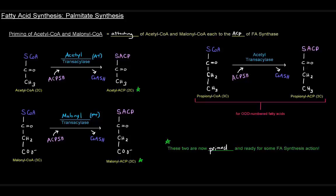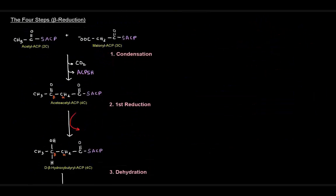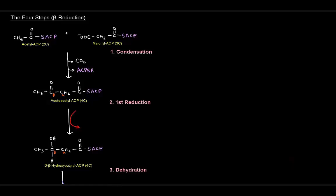Now on to the actual four steps — I call it beta-reduction, and hopefully that will make sense as we go through it. We've got acetyl-ACP and malonyl-ACP ready to go. They are primed and can now undergo the four beta-reduction steps.